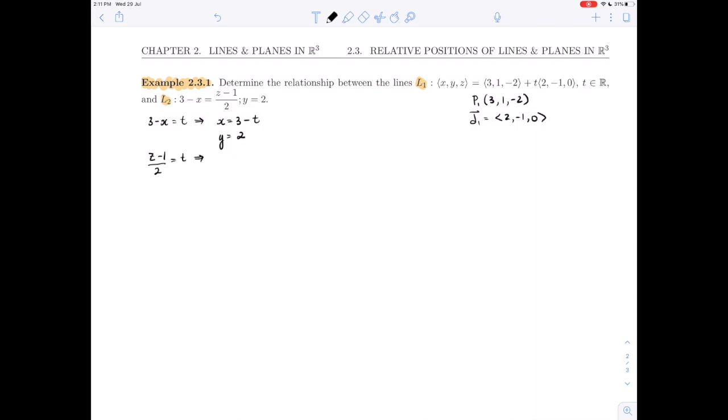And we have z minus 1 over 2 is equal to t. That is going to tell us that z is 1 plus 2t. Now, here is the line in parametric form. And we can read off the point more easily now. So p2 that we can see is the point 3, 2, 1.